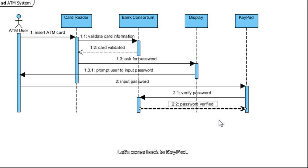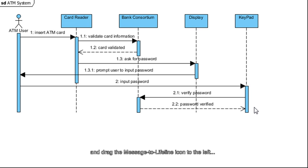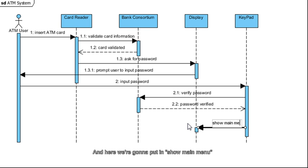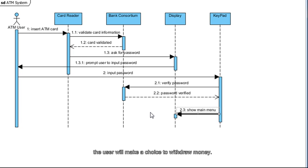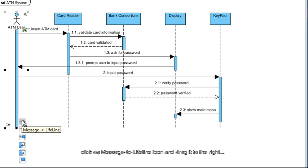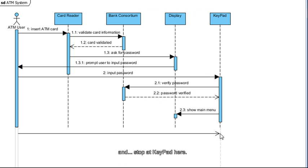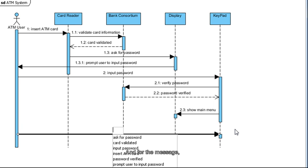Next, come back to Keypad. Select the vertical bar here, drag the Message to Lifeline icon to the left, and stop at Display. Here we're going to put in Show Main Menu. After looking at the Main Menu, the user will make a choice to withdraw money. Select the vertical bar here, click on Message to Lifeline, drag it to the right, pass Card Reader, Bank Consortium, Display, and stop at Keypad. For the message, put in Select to Withdraw Money and press Enter.